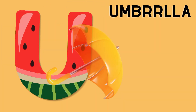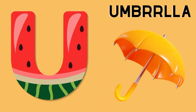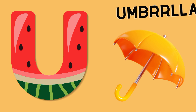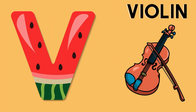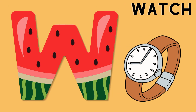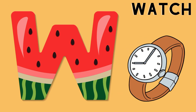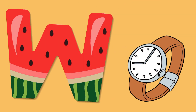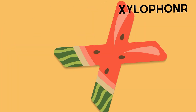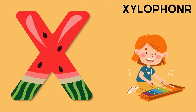U is for umbrella, u-u-u-umbrella. V is for violin, v-v-violin. W is for watch, w-w-watch. X is for xylophone, z-z-xylophone.